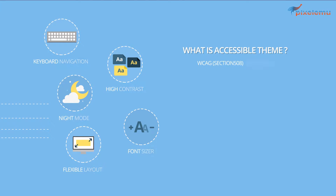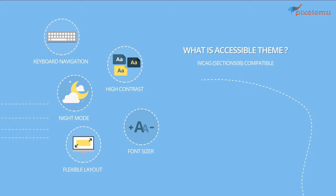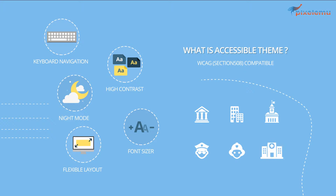Web Content Accessibility Guidelines is a collection of documents relating to the availability of Internet services and, since 2012, has the status of International Standard ISO. More and more countries establish the law that obliges entities performing public duties, such as ministries, regional offices, offices of cities and municipalities, police, fire brigade, hospitals and many other institutions, to customise their websites to meet WCAG 2.0 requirements.